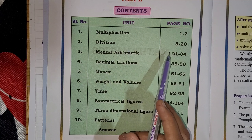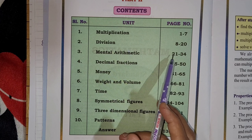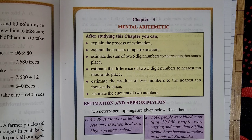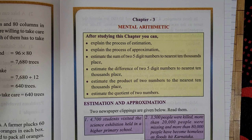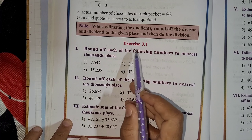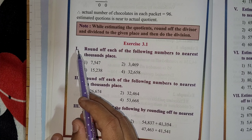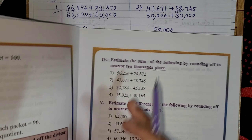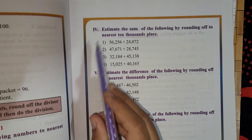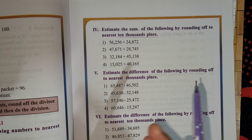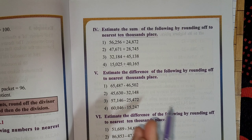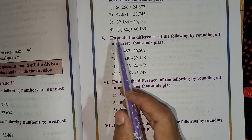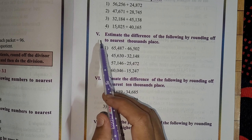Mental arithmetic, open page number 21. So here it is chapter number 3, mental arithmetic. In this lesson we have started exercise 3.1 and already we have completed — we have solved the 1st, 2nd, 3rd main and 4th main. So if you have not seen those videos, you will get the link in my description box, just go and check it out.